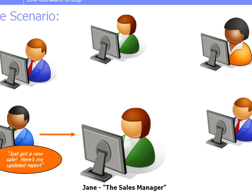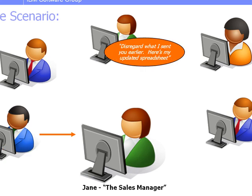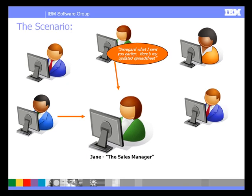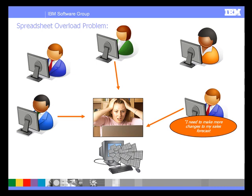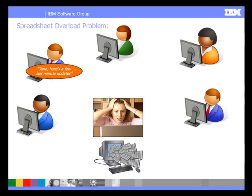Unfortunately, several members of her staff have more updates to send her, so she has to first tell her manager to disregard her previous report because there are some last-minute updates. Jane starts again collecting the data and continually gets last-minute updates from her team. Unfortunately, Jane is in the midst of spreadsheet overload — she's spending a lot of her time collecting, combining, consolidating and distributing spreadsheet data.